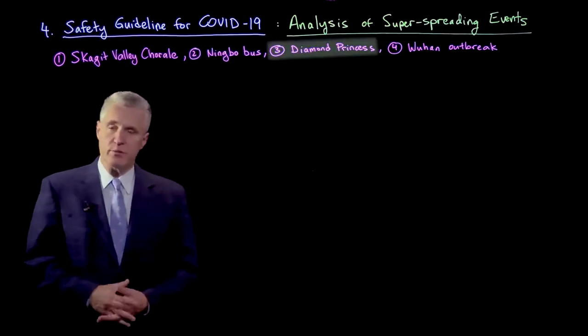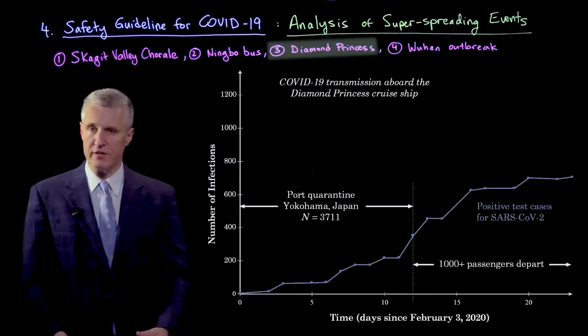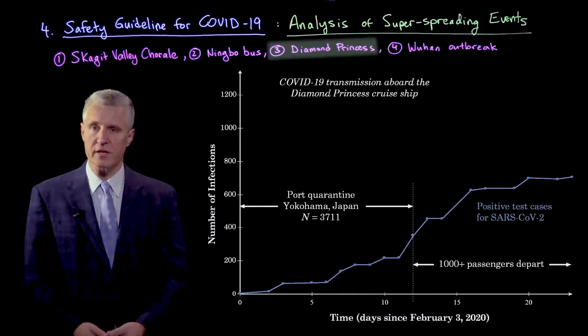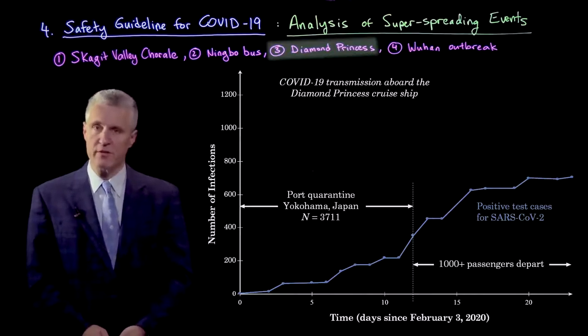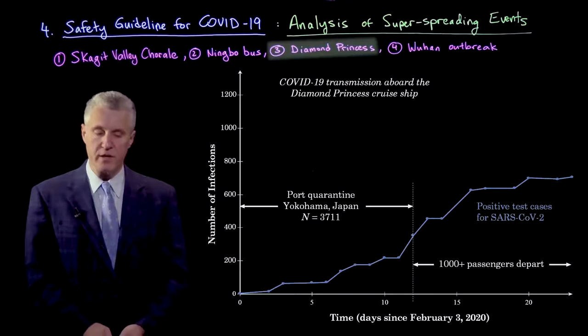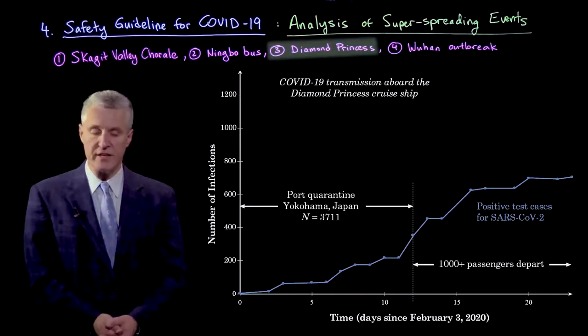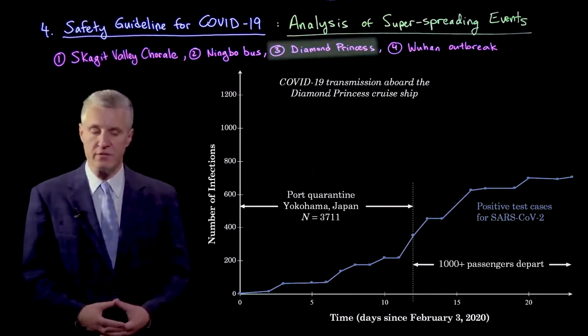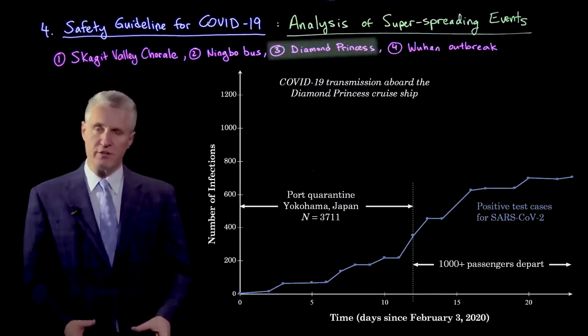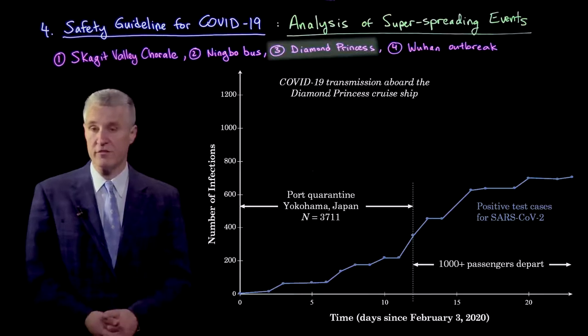Our third example is the Diamond Princess. This was the quarantined cruise ship in Yokohama Port, Japan. There were 3,011 passengers and crew on board. The quarantine lasted for 12 days or around 288 hours, at which point people began to leave. We won't use any data from that point.